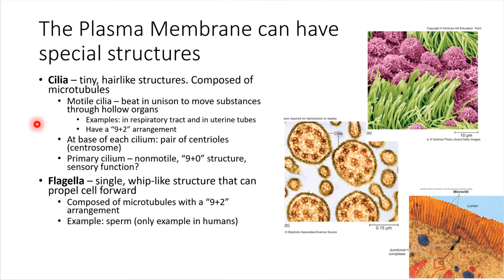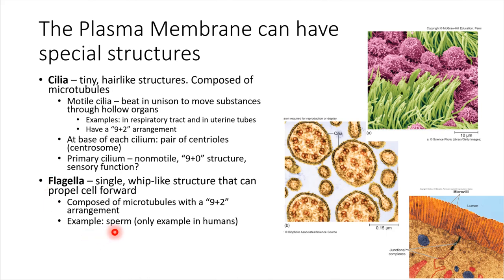Flagella are a related structure that can sometimes be present on cell surfaces. Flagella are also made of microtubules and also have a nine plus two arrangement, but they tend to be quite a bit longer than cilia. Flagella are actually for allowing cells to move. Cilia cause the surroundings to move, but flagella actually allow cells to move. The only example of this in humans is in the case of sperm — sperm have a flagella which allows the sperm to move.